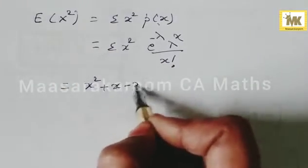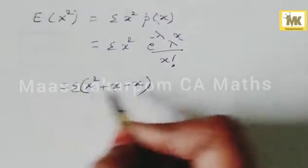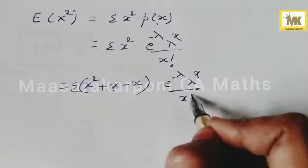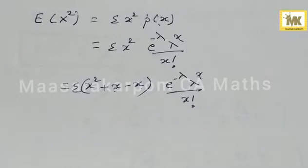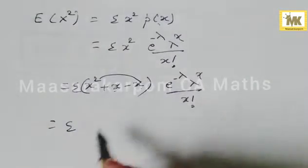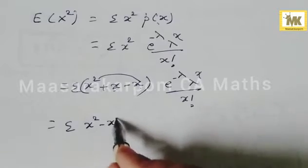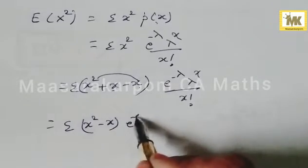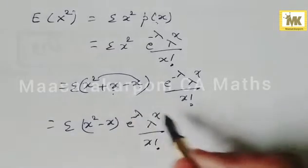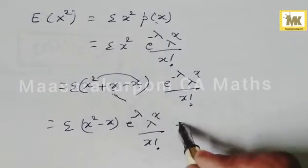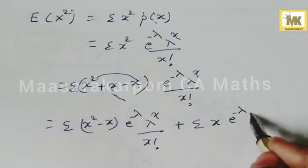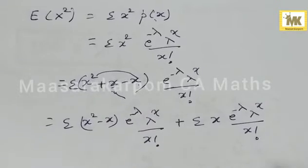We add and subtract x: x² = (x² - x) + x. So this becomes sigma (x² - x) · e^{-λ} · λ^x / x!, plus sigma x · e^{-λ} · λ^x / x!. The second part is just the expectation of x, which equals lambda.